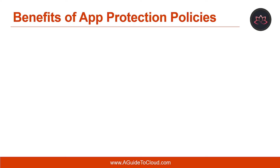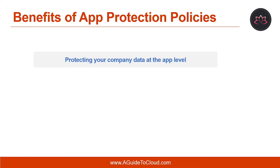There are two important benefits of using App Protection Policies. The first is protecting your company data at the app level. Since mobile app management does not require device management, you can protect company data on both managed and unmanaged devices, and management is centered on user identity. The second benefit is end-user productivity — end-user productivity is not impacted, and policies are only applied in a work context, giving you the ability to protect company data without touching personal data.